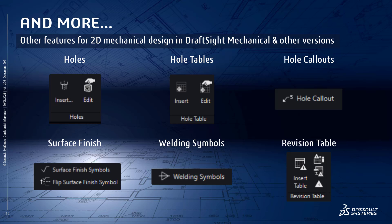Today we will not have time to review every single feature, but DraftSight also includes other key features such as holes, hole tables, and hole callouts. You will also find surface finish and welding symbols. Last but not least, you can insert revision tables to document the changes in your drawings.